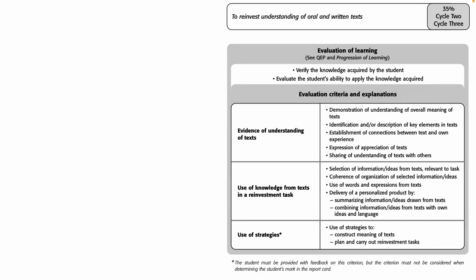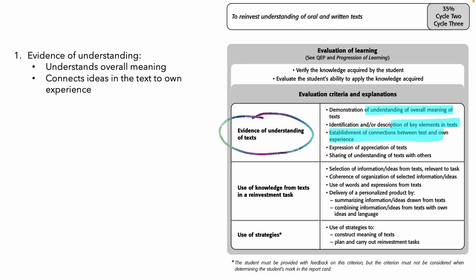This is a page from the Framework for the Evaluation of Learning — a later document produced by the ministry in response to a perceived need for more clarification on exactly how we are evaluating. This is for the primary level, and you'll see it has been updated to align with the secondary. Evidence of understanding of texts: can students show you they've understood what they're reading, watching, and listening to by identifying key elements, making connections between texts, understanding the overall meaning, and connecting it to their own experience? And just like in high school, we're now asking them to use their understanding — taking ideas and words from the text to make something new.